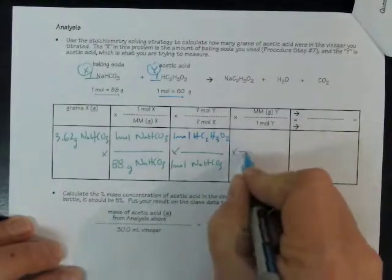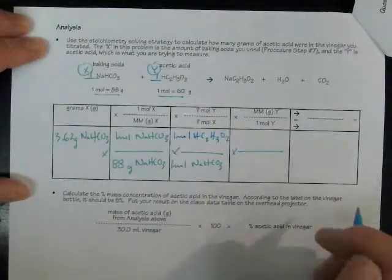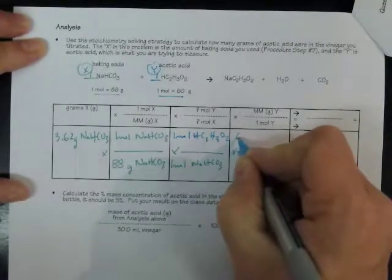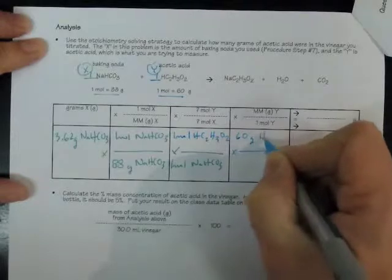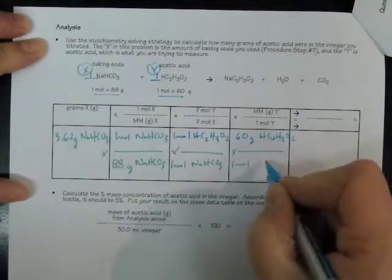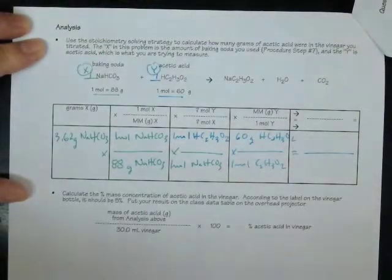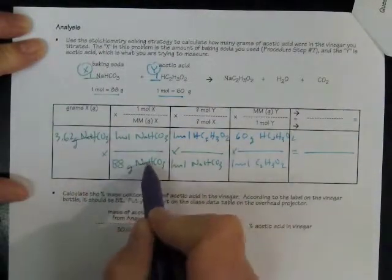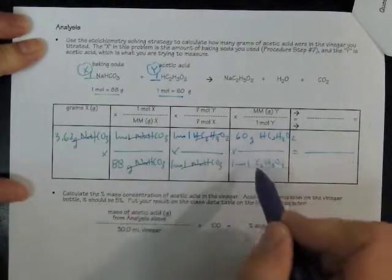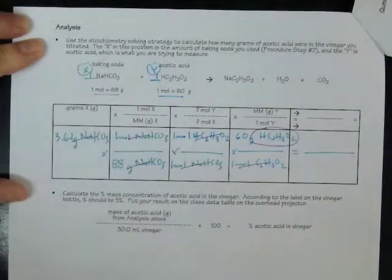In chemistry, we count things by weighing them. So we're going to turn this back into grams, something that we can weigh at the lab bench. And the last step is looking for the molar mass of my Y substance, 60 grams of acetic acid, over 1 mole of acetic acid. Now I know that I set this up right because all the units that I started with are going to cancel out diagonally. Anything on the top and bottom of a fraction reduces to 1 and factors out. And the unit of my answer is the one that I was looking for. I was trying to find grams of acetic acid.